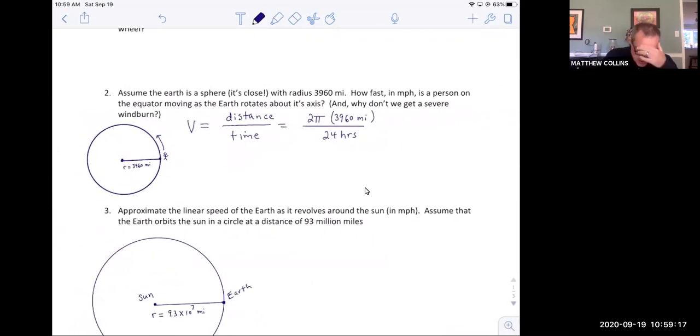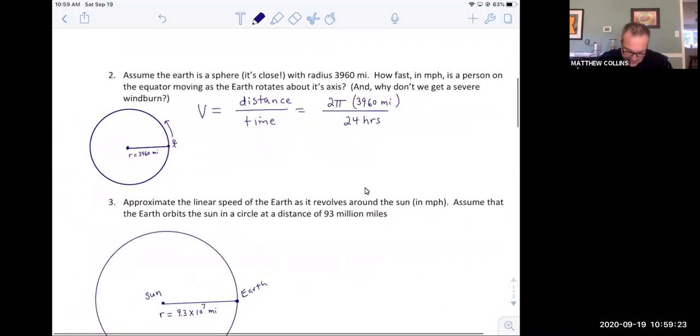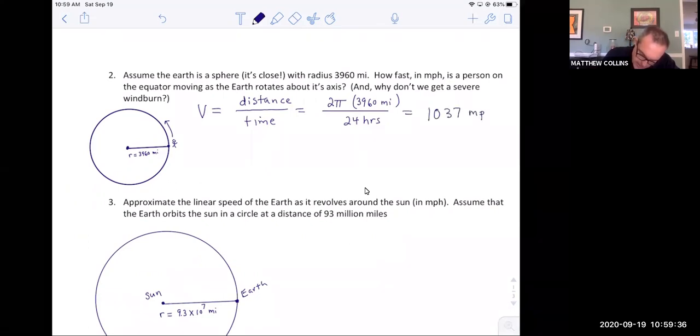So if you check your units, you have miles on the top, hours on the bottom. All we have to do is go to our graphing calculator, take 2π times 3960, divide by 24.